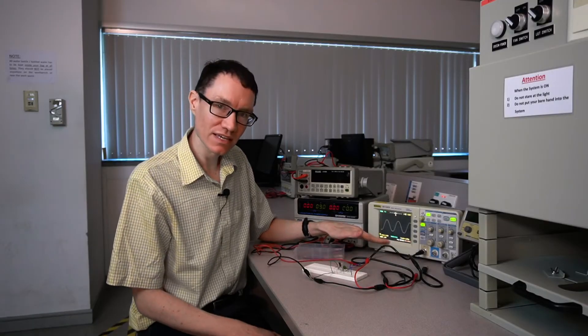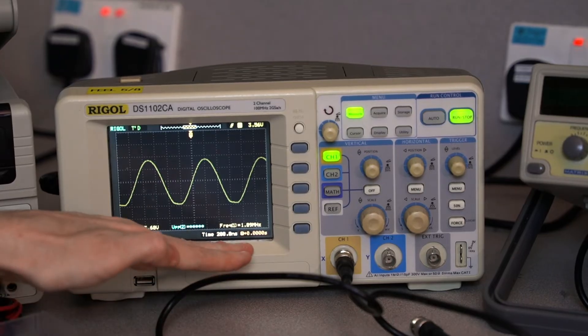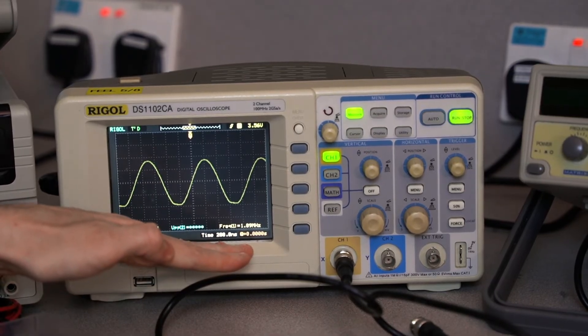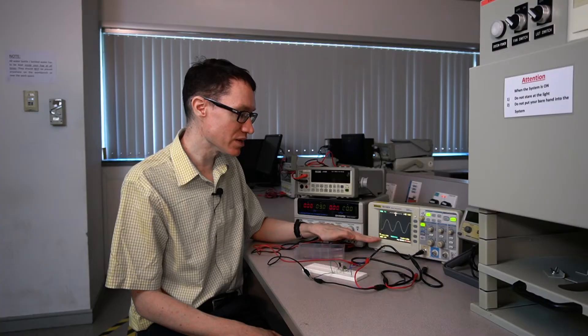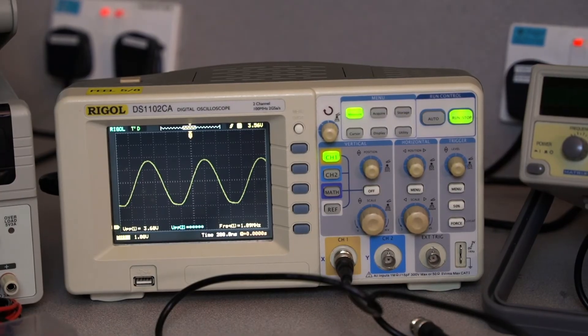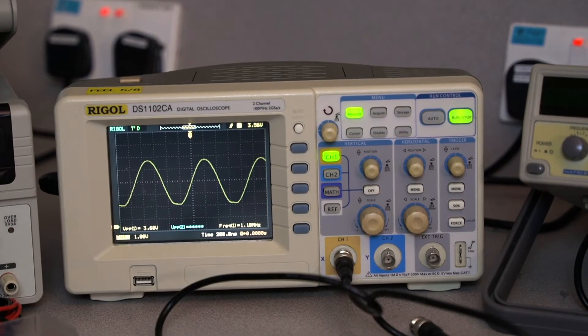As we can see, we have a beautiful sine wave with a frequency of approximately 1.09 megahertz and an amplitude of 3.56 volts. We should be able to hear this on the radio. Let's give it a try.